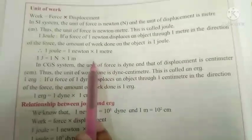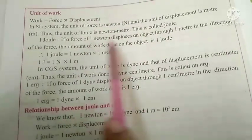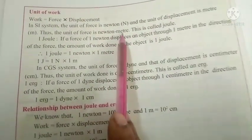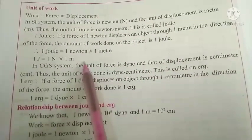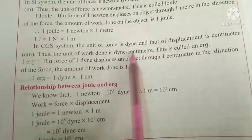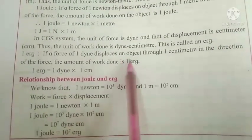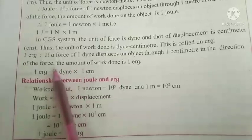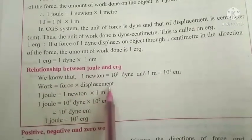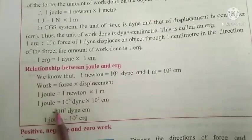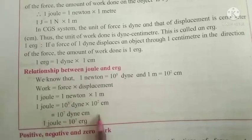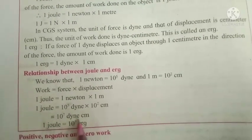The SI unit of work is given as: Work = Force × Displacement. The SI unit of force is Newton (N) and displacement has unit meter (m), so the unit of work is Newton-meter, which is called Joule. So 1 Joule = 1 Newton × 1 meter. In the CGS system, the unit of force is dyne and displacement is centimeter, so dyne-centimeter is called erg. The relationship: 1 Joule = 10 raised to 7 erg.